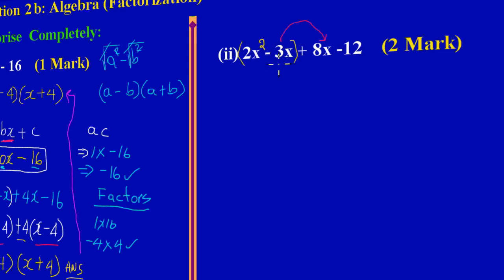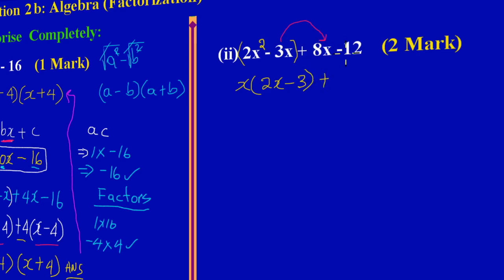I'm factorizing by grouping, comparing the first two terms. Looking at 2x squared minus 3x, x is common: x into 2x squared leaves 2x, and x into negative 3x leaves negative 3. So I have x(2x minus 3). Taking down the positive sign, I now ask: what is common to 8x and negative 12? Four is common: 4 into 8x leaves 2x, and 4 into negative 12 leaves negative 3. So I have plus 4(2x minus 3).